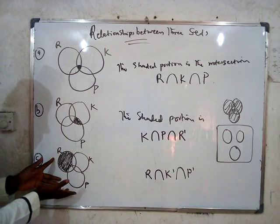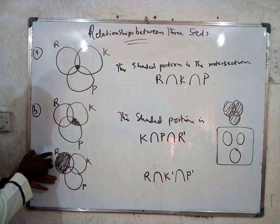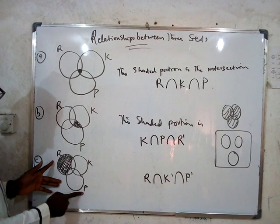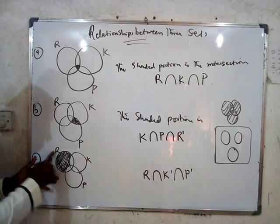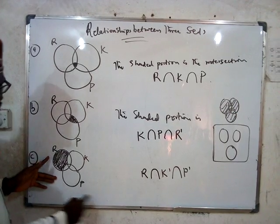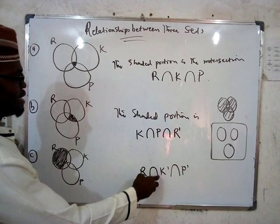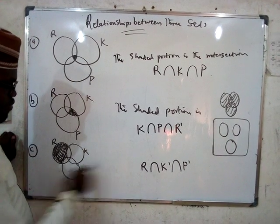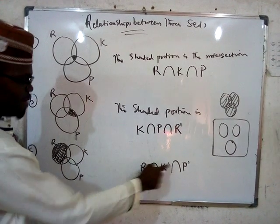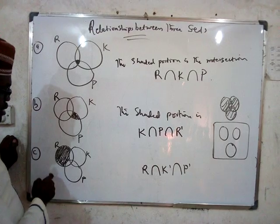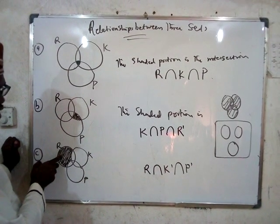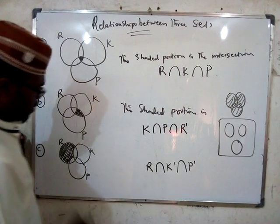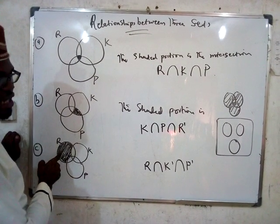Now, what do we have here? We have things that are only in P but are not in Q. And things that are only in R but are not in K and P. So we call it R intersection K prime intersection P prime. K prime simply means not K, and P prime means not P. So if it is only in R, it is R intersection K prime intersection P prime.